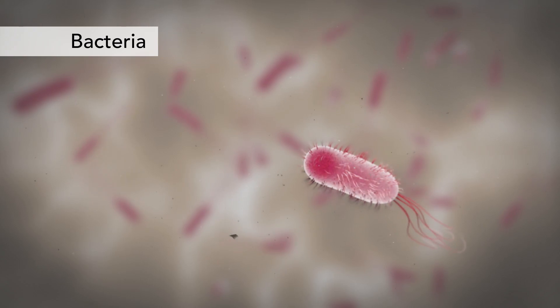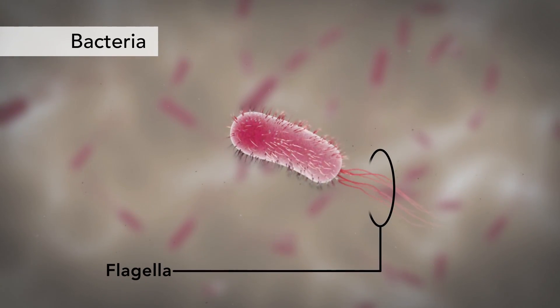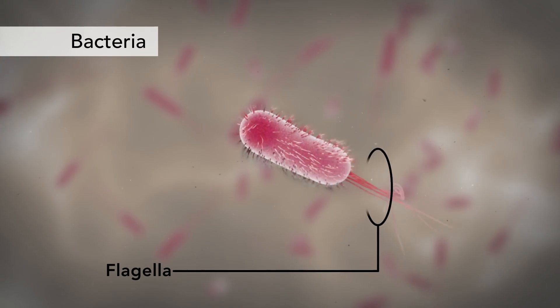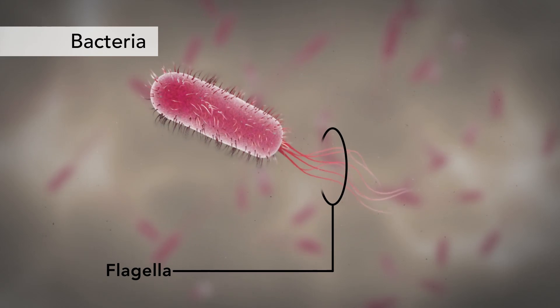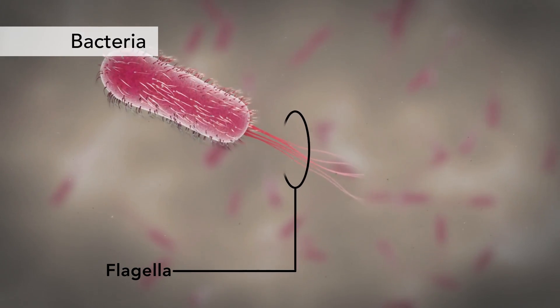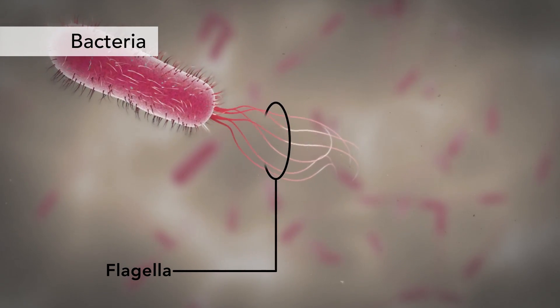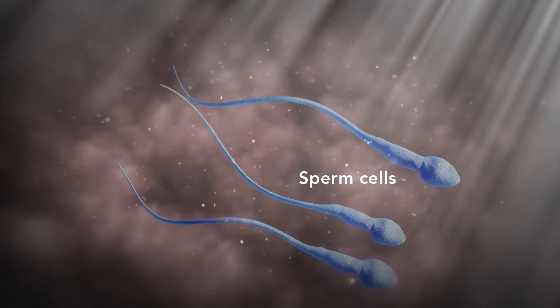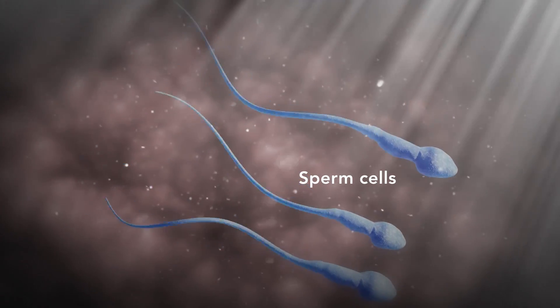Another unique feature in some cells is flagella. Some bacteria have flagella. A flagellum is like a little tail that can help a cell move or propel itself. The only human cell that has a flagellum is a sperm cell.